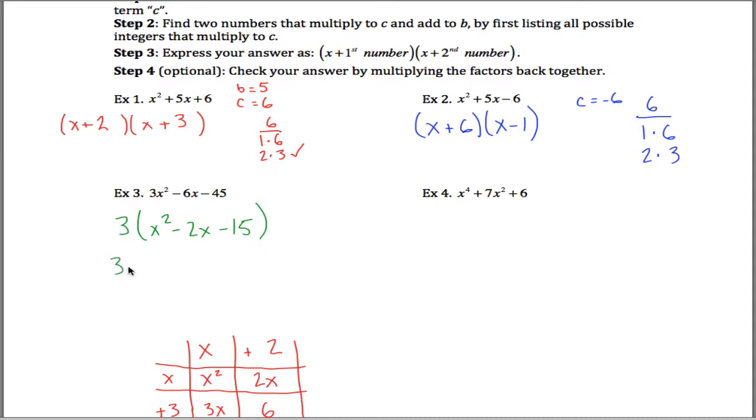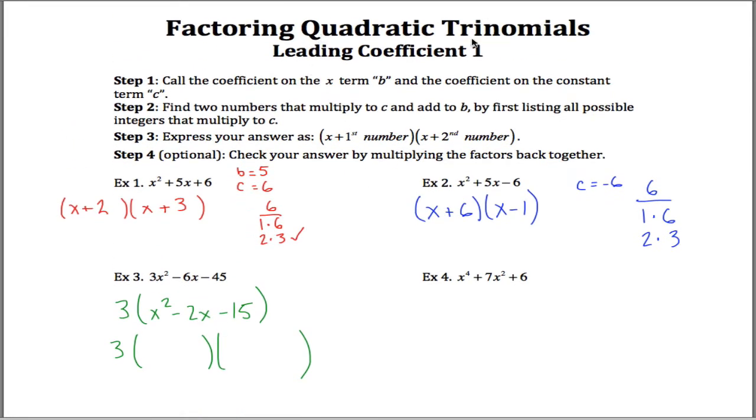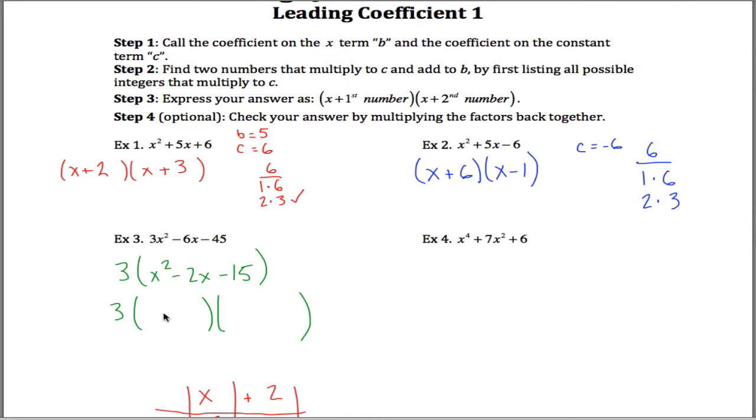And so what we've now done is we've taken care of the 3 and what I'm hoping you'll see is that in these parentheses here we have a quadratic trinomial whose leading coefficient is 1. So we can factor that quadratic trinomial. We need two numbers that multiply to negative 15 and add to negative 2, and I think those will end up being negative 5 and positive 3. If it helps you to list them all go for it, but if you can just see it you don't even have to list them.